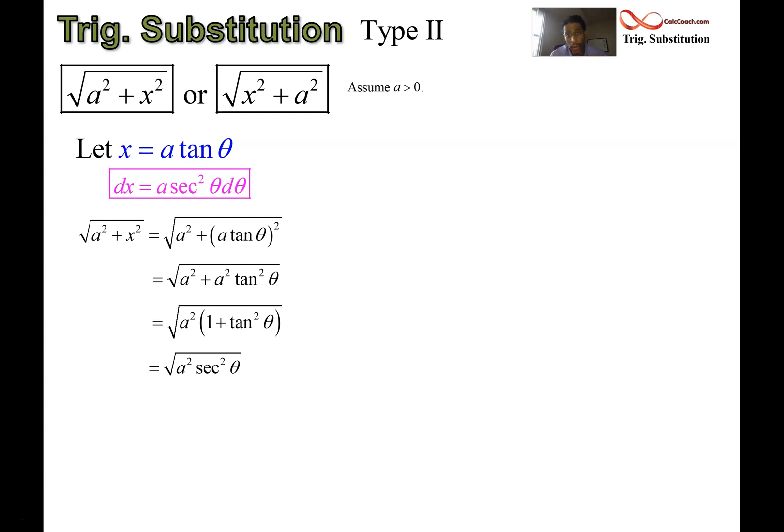You have a perfect square and it's a square root. Technically we need absolute value bars, but we're going to find out that the angles we are worried about with the substitution are angles -π/2 to π/2. And so with those angles, secant is always going to be positive. So we don't have to worry about using these absolute value bars because a is positive and secant theta is also positive or greater than or equal to zero.